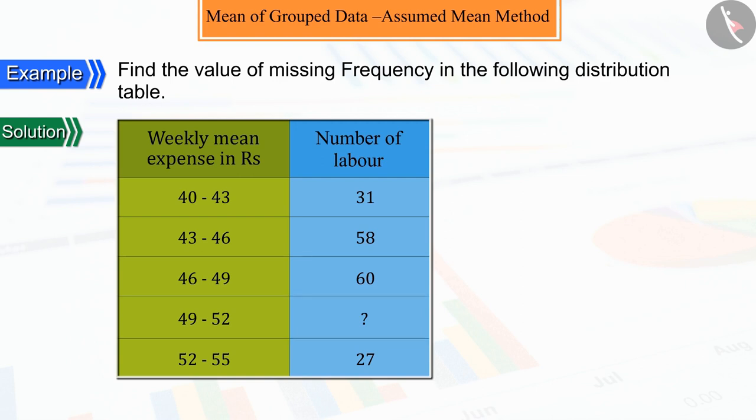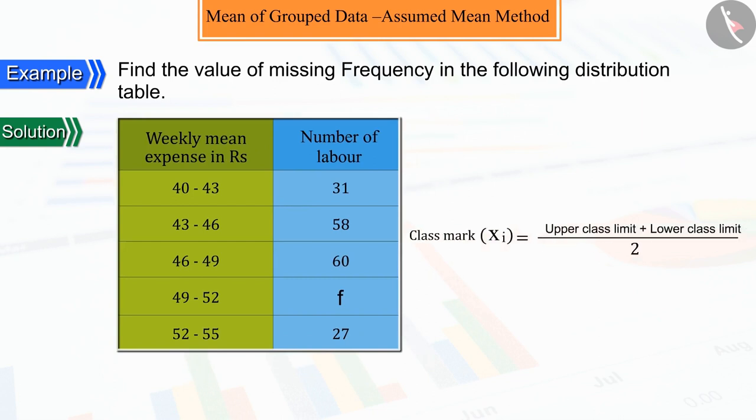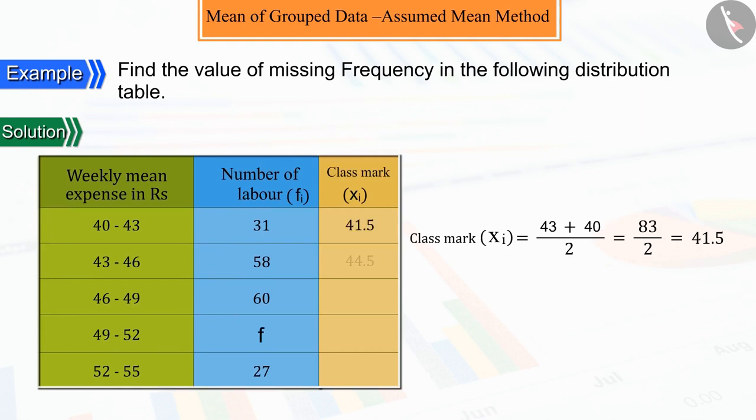For this, we have to find the mean of this distribution. From the table, we can see that to find mean, we will need the midpoints of these class intervals, for which we will use the class mark or midpoint formula.